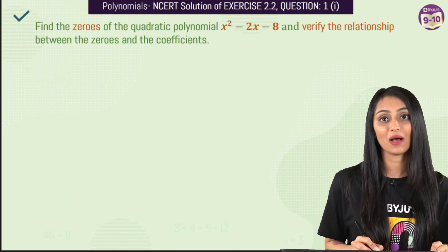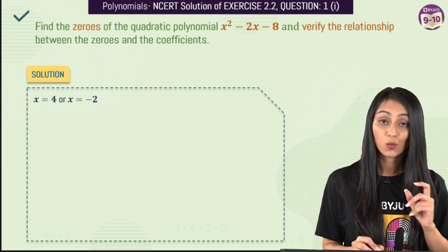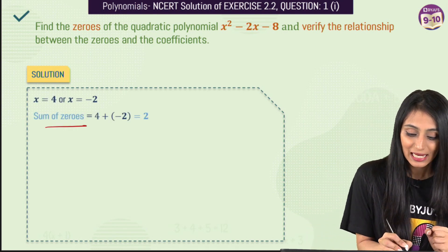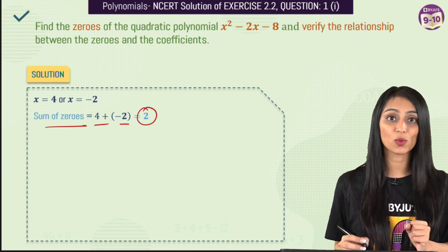Now coming to the next part where we have to verify the relationship, so for that what we will do here is, first of all there are two relationships. The first is sum of zeros. Let's find the sum of these zeros. So 4 plus minus 2, that's going to be 2.